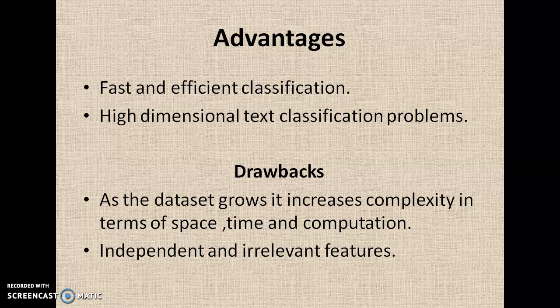The other negative end is that, as previously discussed, one of the characteristics of the Naive Bayes algorithm is that the features are independent and irrelevant. This is actually one of the drawbacks — the absence of relevance among the attributes is a drawback of the Naive Bayes algorithm. So we have seen the various positive and negative ends of this algorithm.